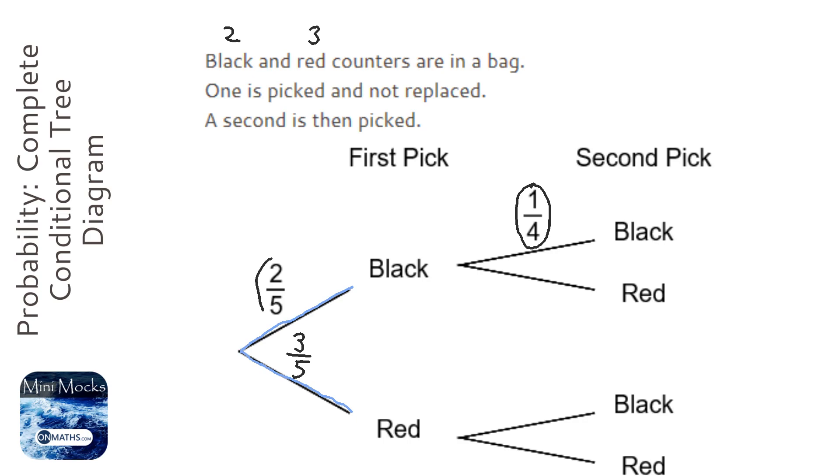Just by knowing this fraction you can't tell how many blacks and reds there are. It could be four blacks and six reds. We can't really tell, but looking at the second pick we can tell.